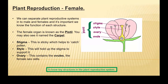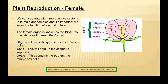Three parts. We have the stigma. This is like a sticky sort of surface, usually found in the center, and that will be used to help catch pollen. Now, if you know what pollen is, and you're like me and you suffer with hay fever, you'll know that it's currently pollen season. We have the style, which will hold up the stigma to support it.